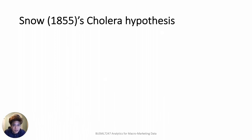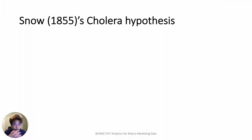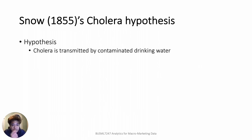Let's go back to the middle of the 19th century. At that time, cholera was a critical infectious disease even in the UK. John Snow was a founding member of the Epidemiological Society of London, formed in response to the cholera outbreak of 1849. He thought that cholera is transmitted by contaminated drinking water, not through air, and tried to convince people of his theory with clear evidence.